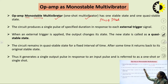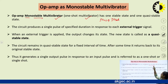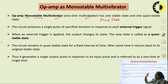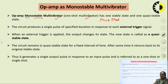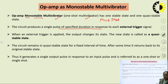In a monostable multivibrator, out of these two states, one state will be stable — that is why the circuit is called monostable. It will have one stable state and will produce a single pulse of specified duration in response to an external triggering pulse.